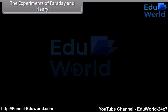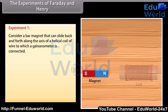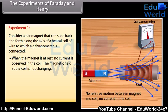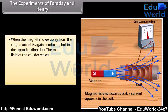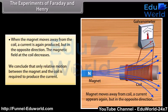The experiments of Faraday and Henry. Experiment 1: Consider a bar magnet that can slide back and forth along the axis of a helical coil of wire to which a galvanometer is connected. When the magnet is at rest, no current is observed in the coil — the magnetic field at the coil is not changing. When the magnet moves towards the coil, a current flows. As the magnet approaches, the magnetic field at the location of the coil increases. When the magnet moves away, a current is again produced but in the opposite direction, as the magnetic field at the coil decreases. We conclude that only relative motion between the magnet and the coil is required to produce the current.